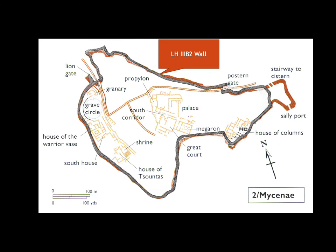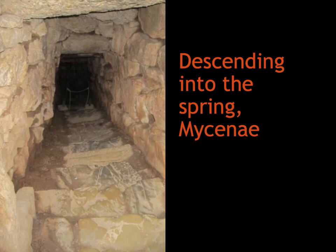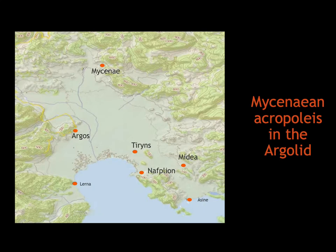Around 1250 BCE, another extension of the acropolis happened, incorporating a small but crucial part of the hill that had access to a cistern and a spring. Clearly, access to water during times of siege was a concern — hence the building of a shaft with a staircase that provided safe access to water. Similar concerns for shoring up fortifications and securing water access were not just present at Mycenae but also at neighboring Tiryns, where similar projects took place 50 to 70 years before the final destructions.